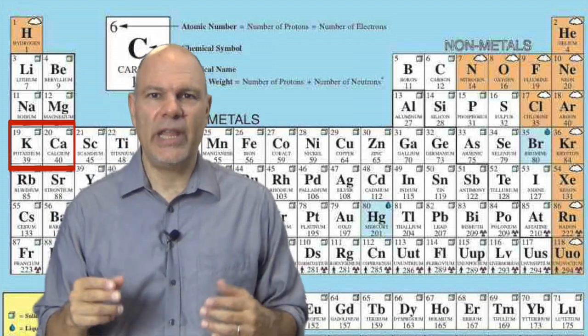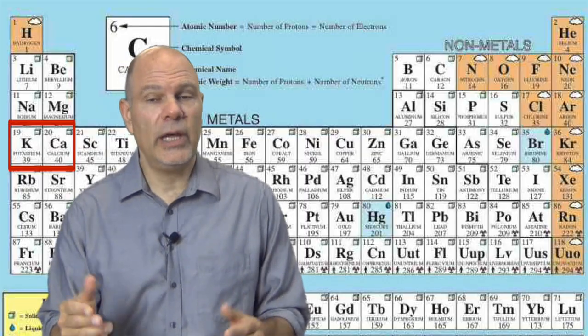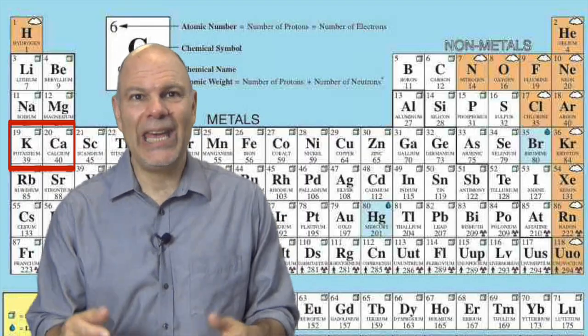The octet rule's usefulness starts to break down with the elements that are in the fourth row of the periodic table. But we can use it for the first two elements in that row, which are both important in living things. Those are the metals potassium, symbol is K, and calcium, symbol is CA. Let's jump right into the larger of those two, which is calcium.